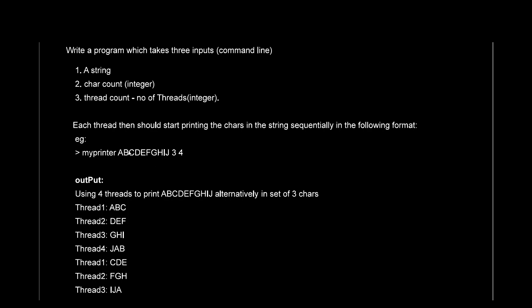So thread four prints 'jab', then when all threads are done they roll back — thread one starts again. Thread four finished at character b, so thread one picks up from the next character c and prints 'cde'. Then thread two prints 'fgh', then thread three prints 'ij', and so on — it keeps going continuously.